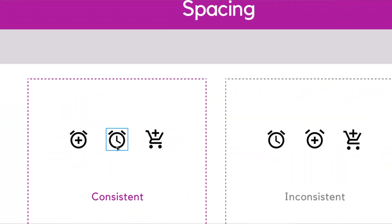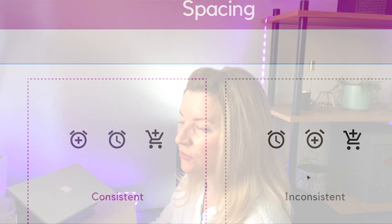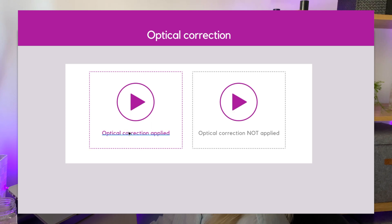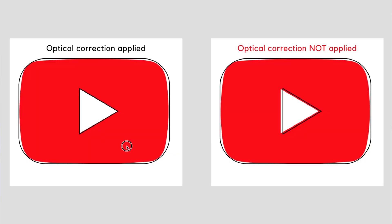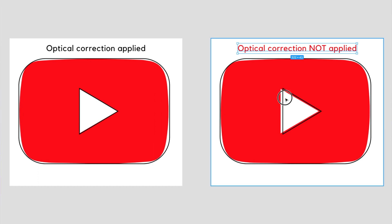For spacing, use the same spacing between icon elements — for example, 3 pixels — to unify and harmonize your icons. Next is optical correction: sometimes when you have different shapes nested in each other, your icon can look visually off-balance. If that's the case, align the elements based on the optical center to balance them. The YouTube logo mark is a perfect example — the triangle is not exactly in the center.